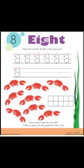There are so many crabs. Count the crabs — 1, 2, 3, 4, 5, 6, 7, 8. There are 8 crabs. So what is the spelling of 8? E-I-G-H-T, 8.